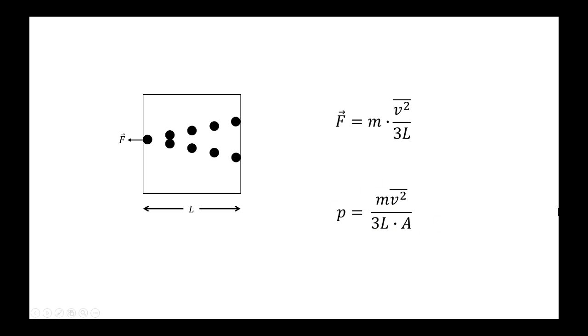And again, this is just for one molecule. If we want the total pressure from all of the molecules over this repeating cycle, we need to multiply by the total number of molecules. So here's the expression for total pressure from all of the molecules. And we're getting close.